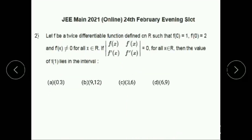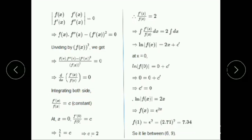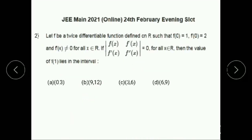We have to find the value of f(1). Since f(x) = e^(2x), therefore f(1) = e². The value of e is 2.71, so 2.71² = 7.34. So it lies between 6 and 9. From the options, we can conclude that the value of f(1) lies in the interval (6, 9).